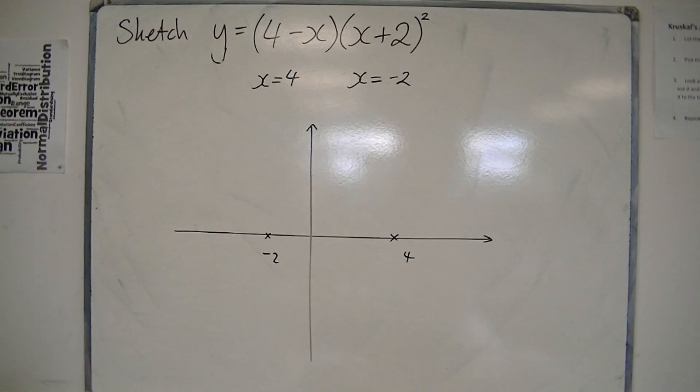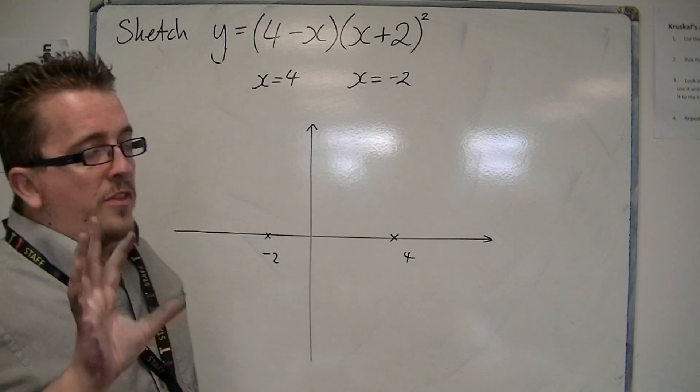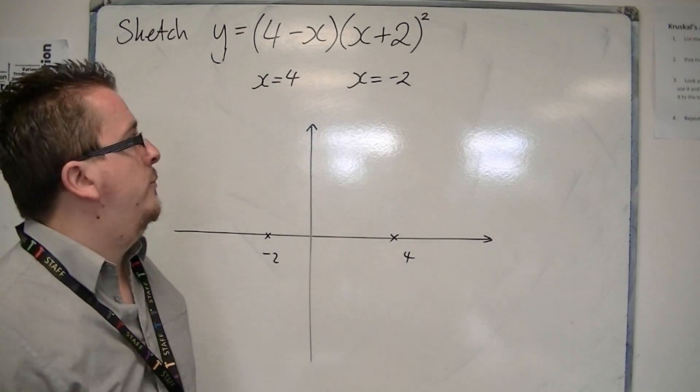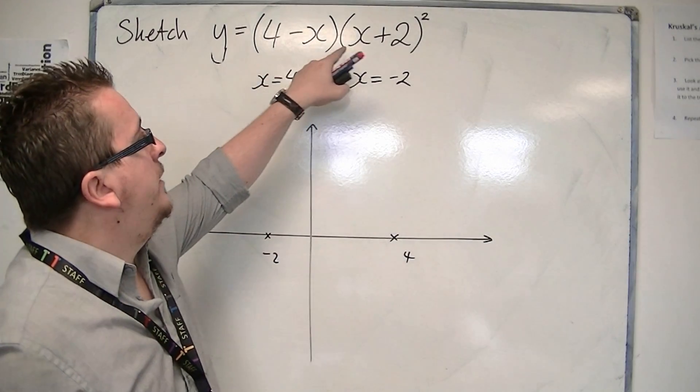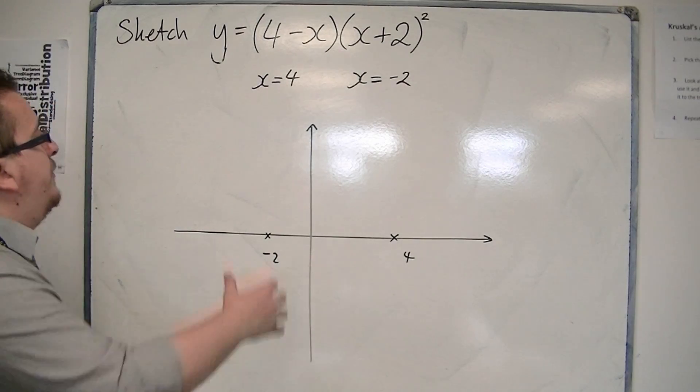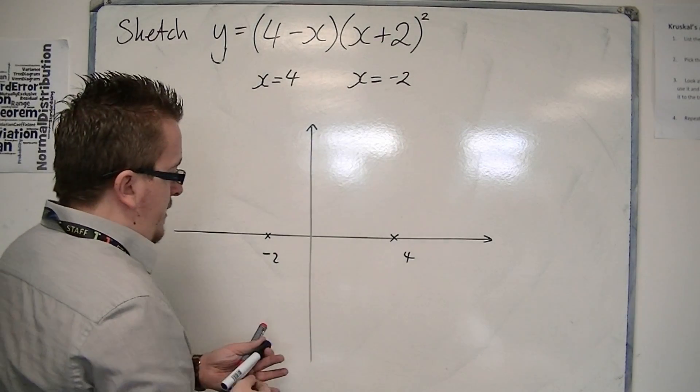Then we look at, is it a positive cubic or a negative one? We would have minus x times x times x, so we've got a minus x cubed, so it's negative. So we're starting at the top left this time.